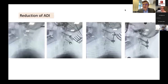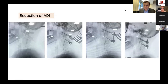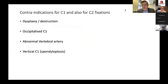It is often possible to use C1 reduction screws to translate the atlanto-dens interval into a reduced position. Contraindications for lateral mass fixation include dysmorphism or destruction of the C1 lateral mass and abnormal vertebral artery anatomy that precludes screw positioning.